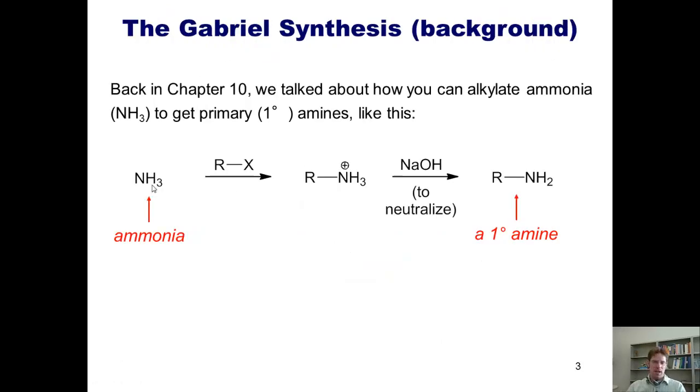Back in Chapter 10, we talked about how you can alkylate ammonia, NH3, shown here, to get primary amines like this. In other words, I could take ammonia and have the lone pairs on the nitrogen attack the alkyl group, kick off an alkyl halide, and generate an ammonium salt. When I neutralize that salt, I then get a primary amine, as shown here.